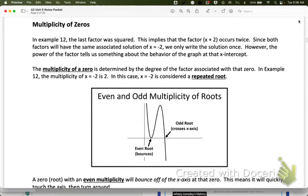So the multiplicity of zeros has to do with the exponents of the factors. So in the last example we looked at, the last factor was squared. This tells us that the factor x plus 2 occurs twice. x plus 2 times x plus 2, that makes x plus 2 squared. Since both of those have the solution negative 2, we only write it once. But the power of that factor tells us about the behavior of the graph. The multiplicity of a zero is determined by the degree of the factor associated with that zero. So in example 12, the multiplicity of x equals negative 2 is 2. Because it came from the factor x plus 2 squared. So the zero is x equals negative 2. But the multiplicity is 2 because that is the power that it came from.